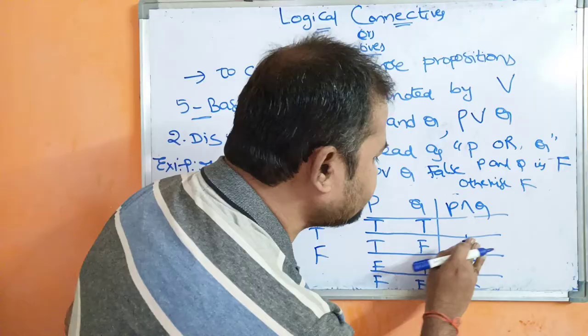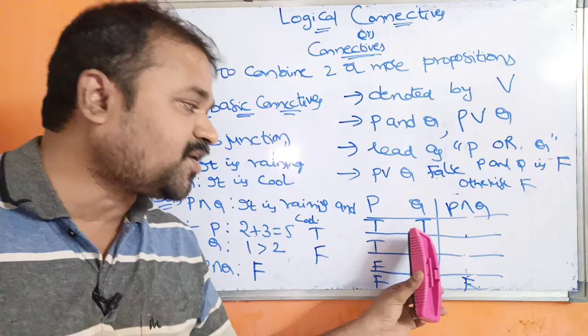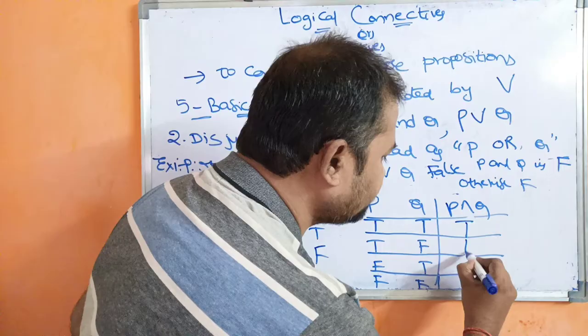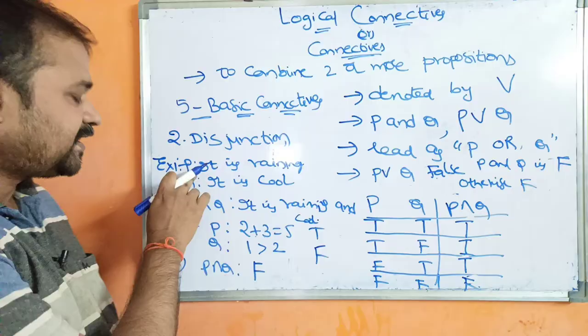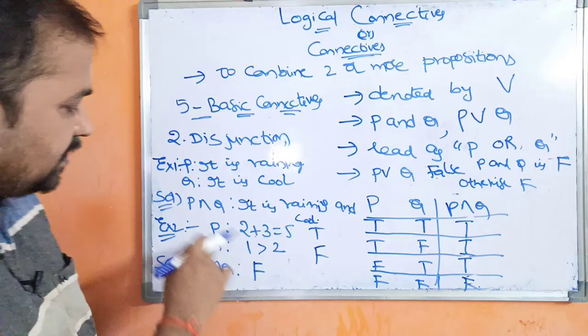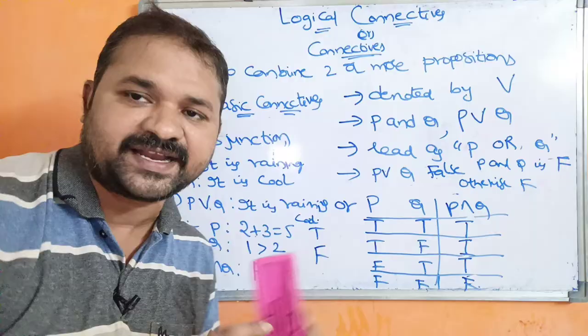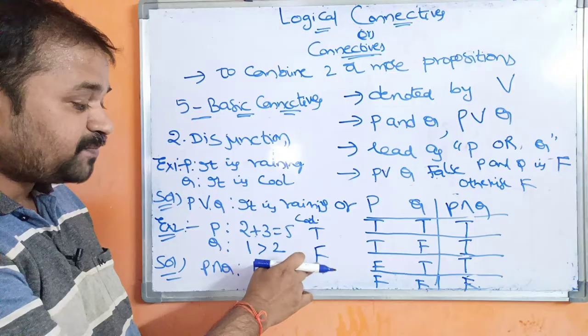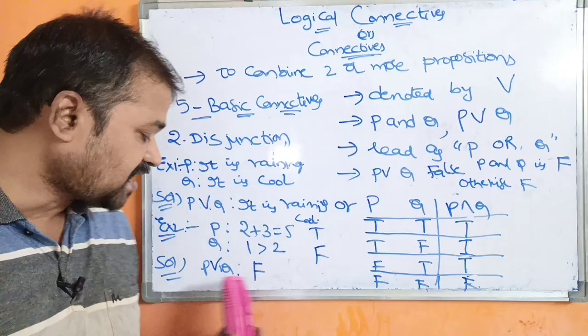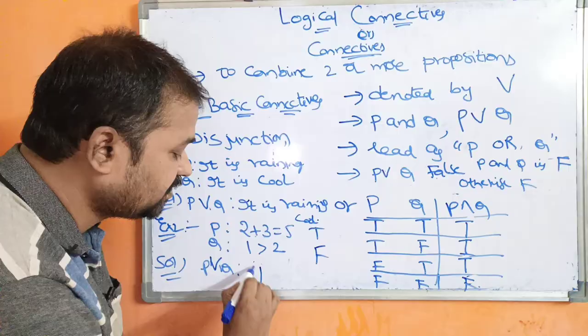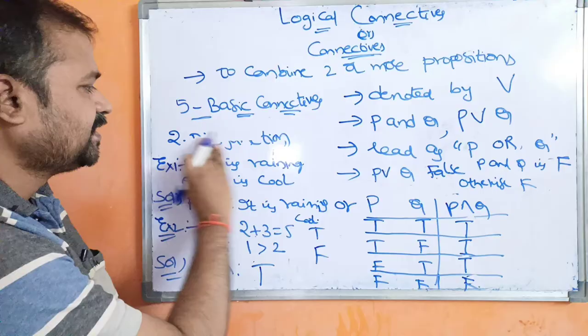That means if one of the propositions is true, then the result is true. For the truth table: false-false gives false; true-true gives true; true-false gives true; false-true gives true. Example 1: P is 'It is raining,' Q is 'It is cool,' so P ∨ Q is 'It is raining or it is cool.' Example 2: P is true and Q is false, so P ∨ Q — true or false — gives true. That is about disjunction.